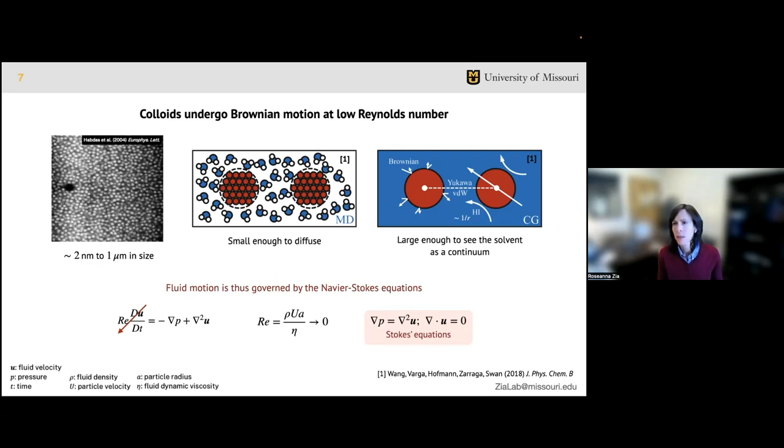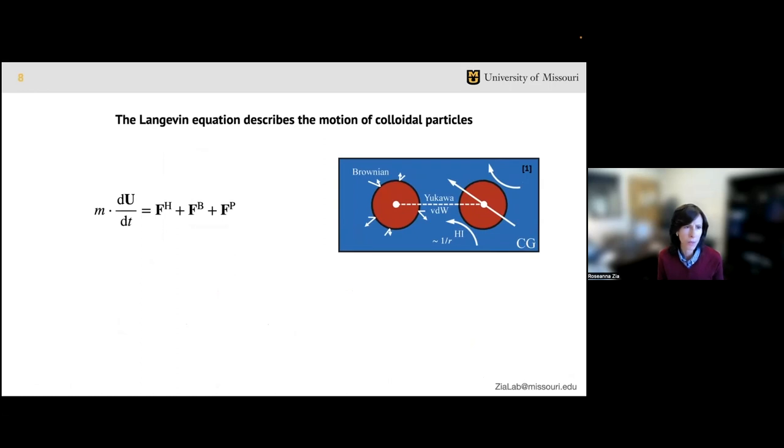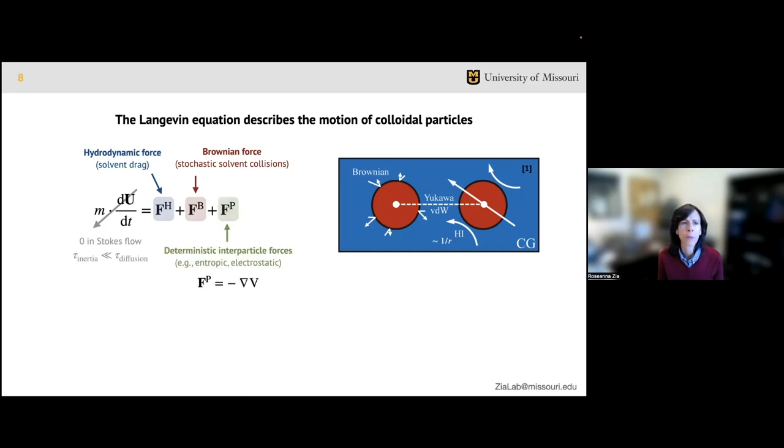In this limit, the inertial term vanishes and the equations simplify to the Stokes equations. I'll emphasize that we're interested in time scales where inertia doesn't matter. We can then represent the coupling of motion between individual particles using the Langevin equation, which solves a momentum balance on each particle in suspension. In the Stokes flow limit, inertia is negligible, so the left-hand side is set to zero. Particles can experience various forces including hydrodynamic drag exerted by the fluid on the particle, a Brownian force describing stochastic fluctuations due to solvent collisions, and deterministic interparticle forces which depend on the gradient of the potential.